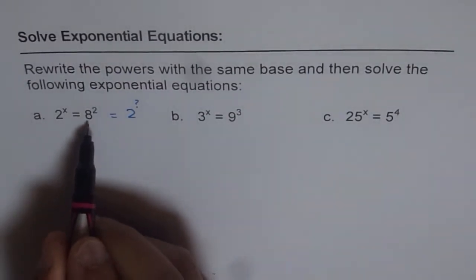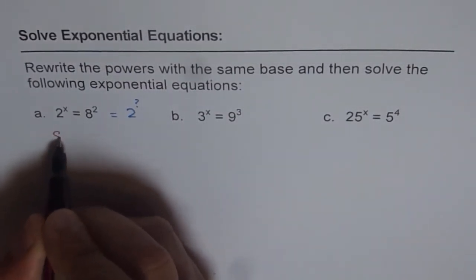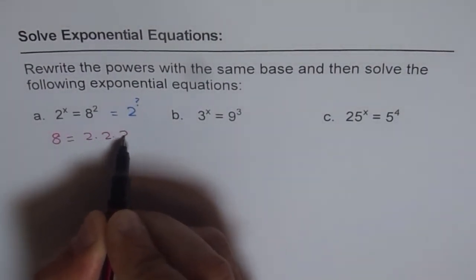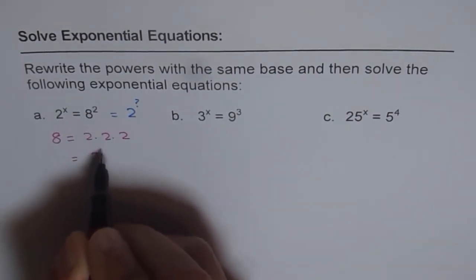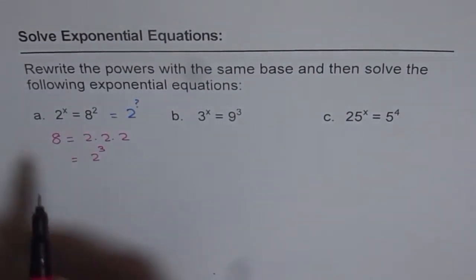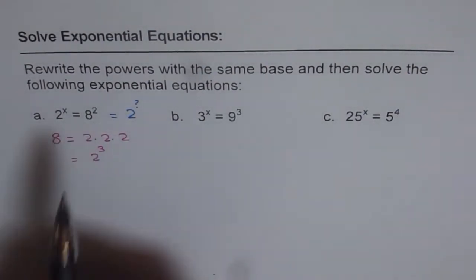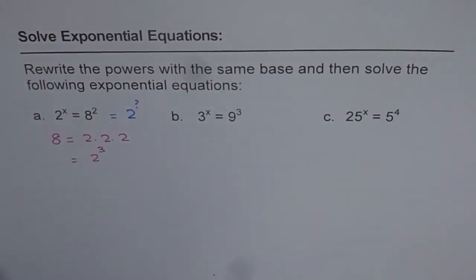We have to write 8 as a base of 2. Now, 8 equals what? 8 is 2 times 2 times 2, so you can say 8 is 2 to the power of 3. Now, once we do this, we know we can write 8 as 2 to the power of 3. Let us rewrite our equation and then solve it.